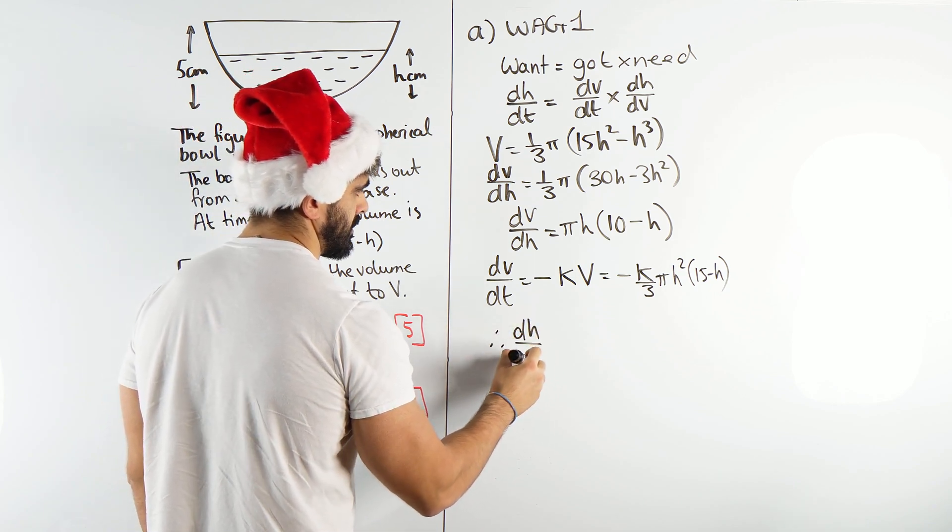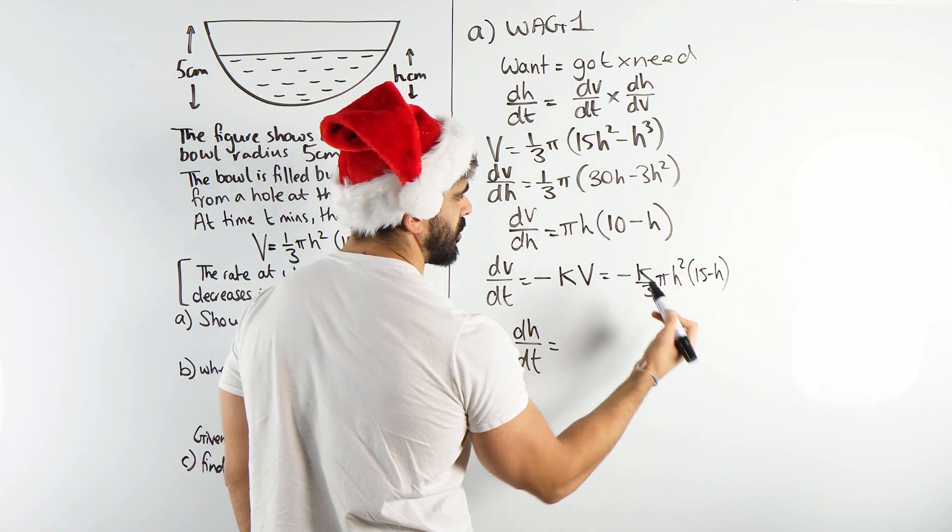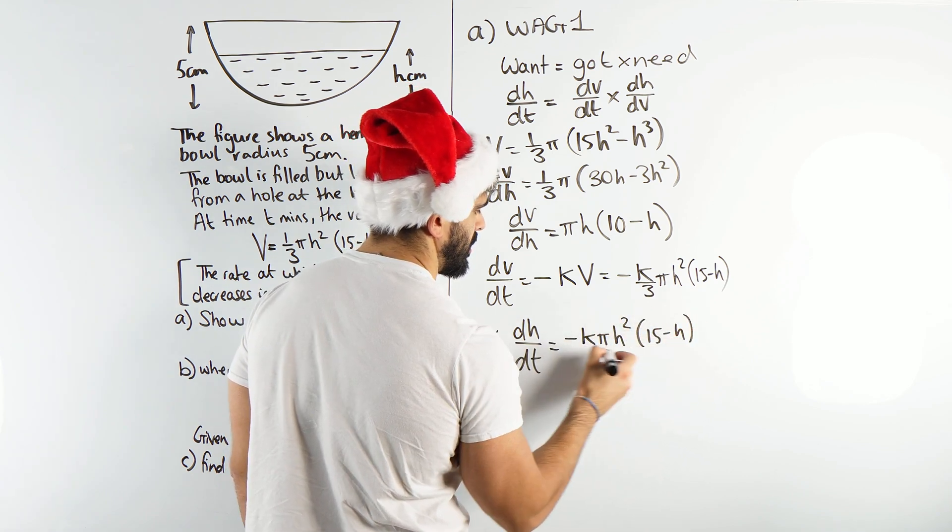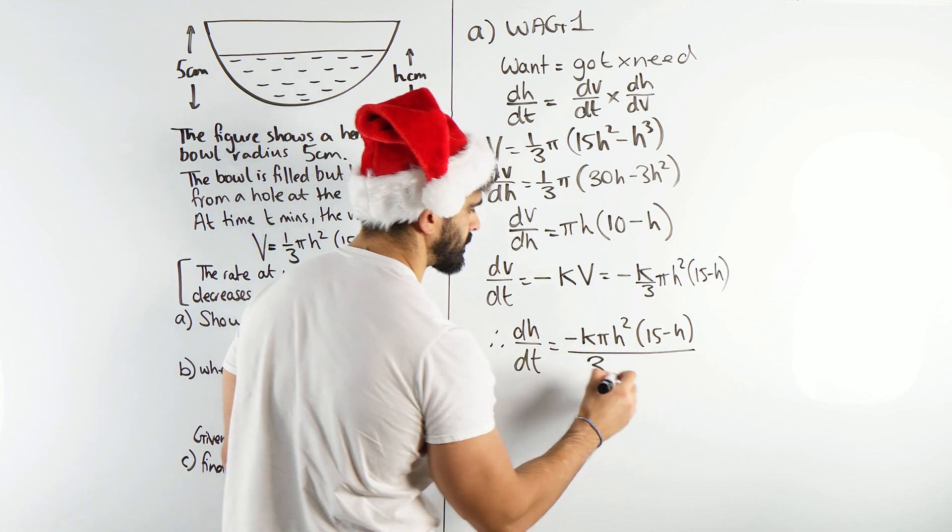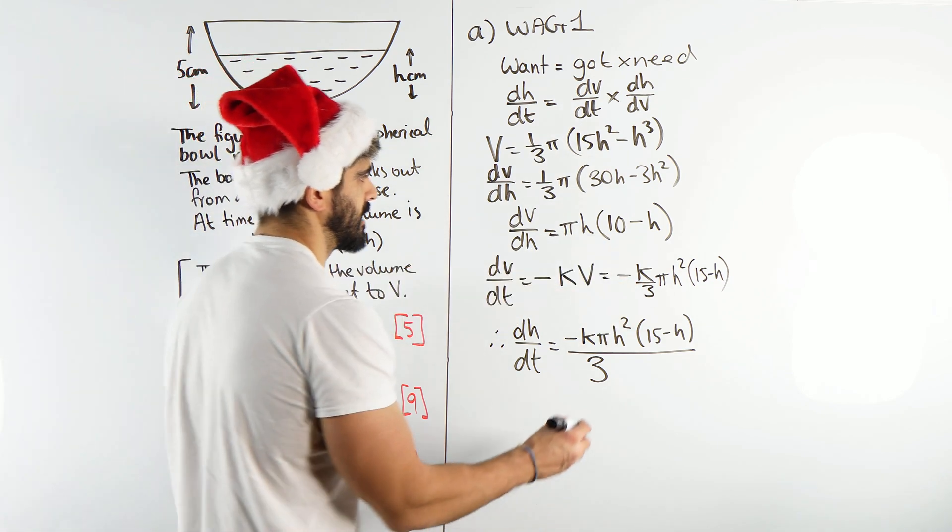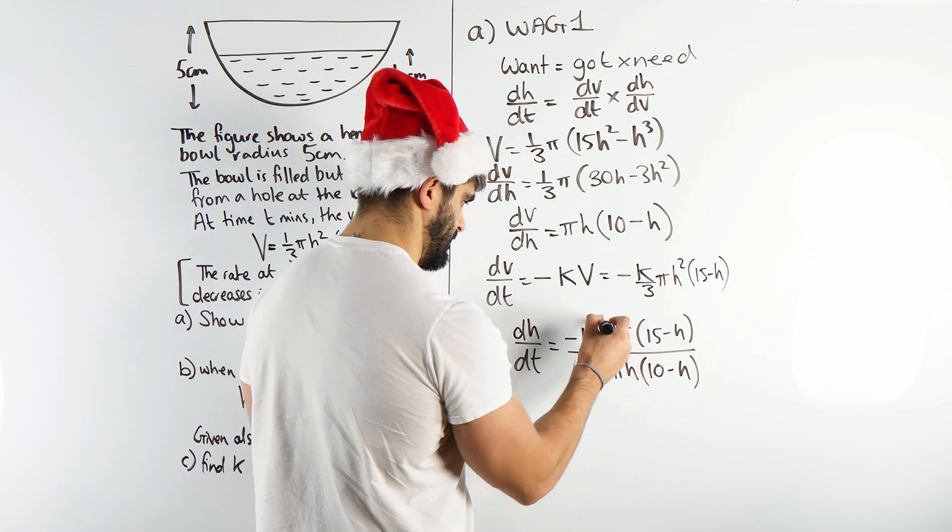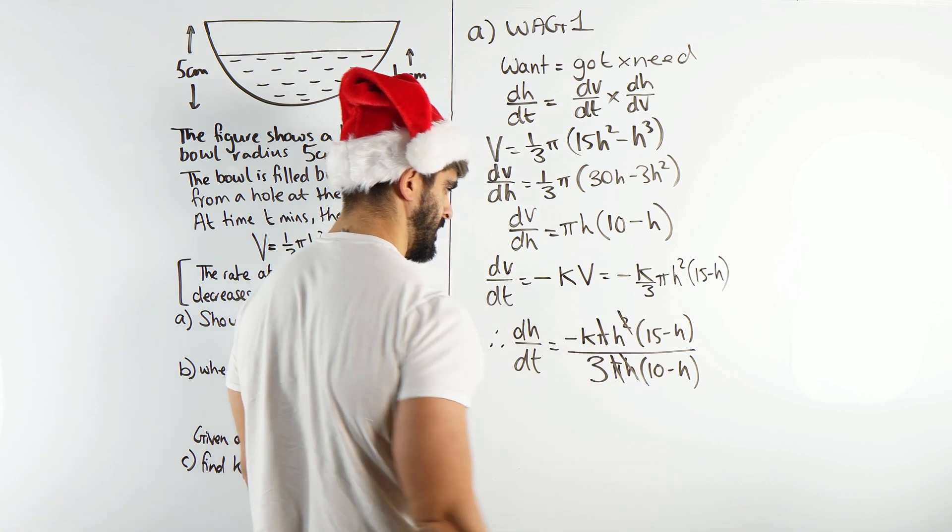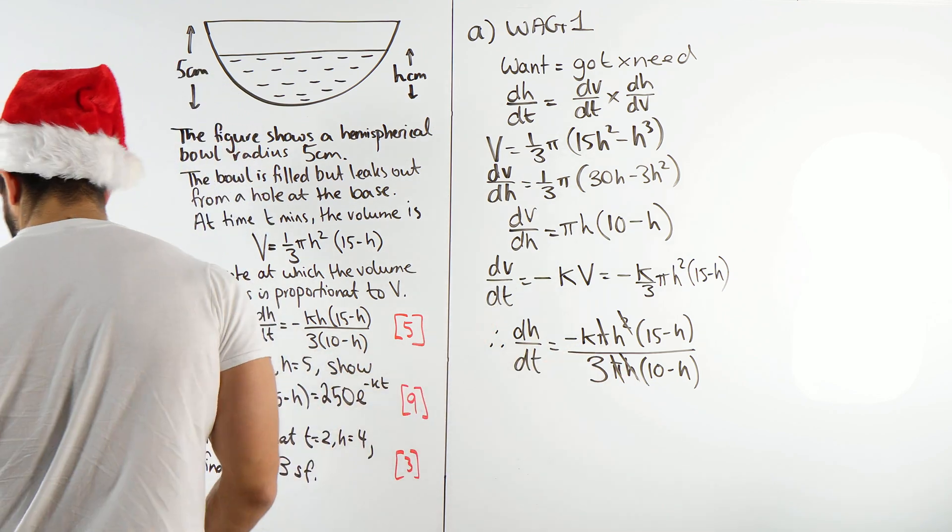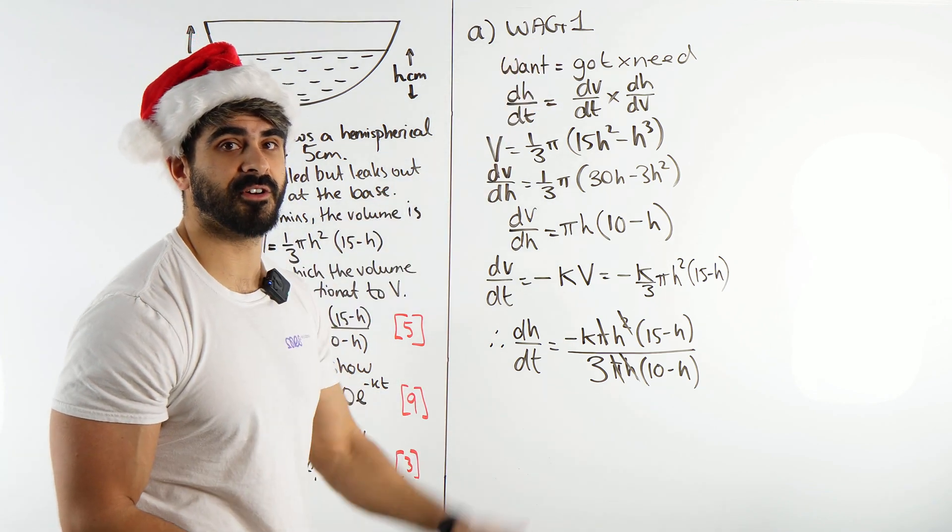Anyway, we have minus K V. V is one third. So I'll say K over 3 pi, H squared 15 minus H. Therefore, dH by dt is... So I'm going to write all of this on the numerator with the 3 on the denominator. So I get minus K pi H squared 15 minus H all over 3. And then, remember, we're timesing it by dH dV, which is the reciprocal of this. So I'm just going to put all of this in the denominator. So I get pi H 10 minus H. And that's it. We're done. Okay, so that is part A. I'm going to obviously write this clean. But we... I'm going to write this clean over here and let's carry on.